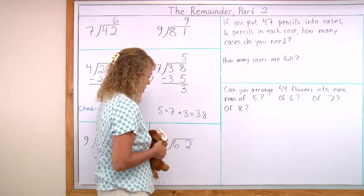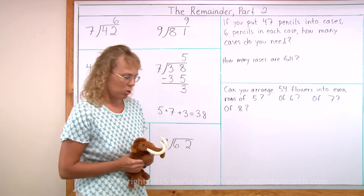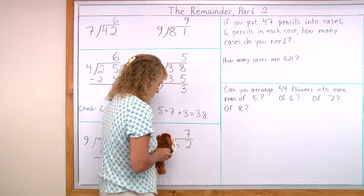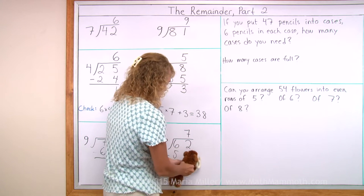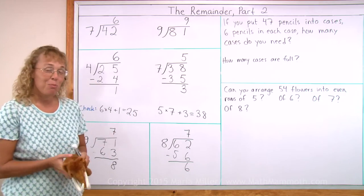Okay, another one. 62 divided by 8. How many times does 8 go into 62? Good job, Matthew. He got it right this time too. I hope you did too.